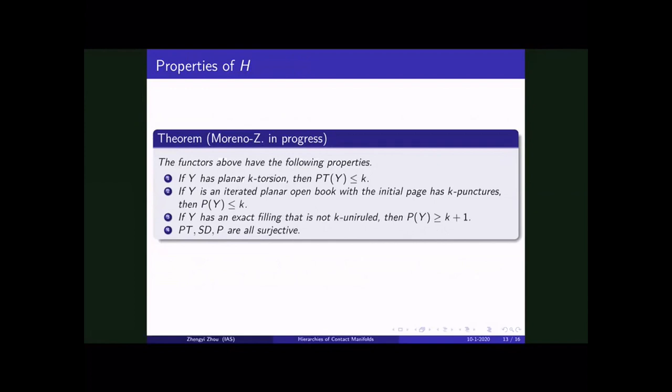And the nice thing about this functor is we can have like lots of estimates for this functor. So if Y has planar K torsion, which is a purely geometric concept, then algebraic planar torsion will be smaller equal to K. And the planar 0 torsion is exactly over twisted. And then we have an upper bound for planarity, and then we also have a lower bound for planarity. And moreover, we know that these functors P, T, S, D, and P are all surjective. So there are rich structures in this contact cobordism category.